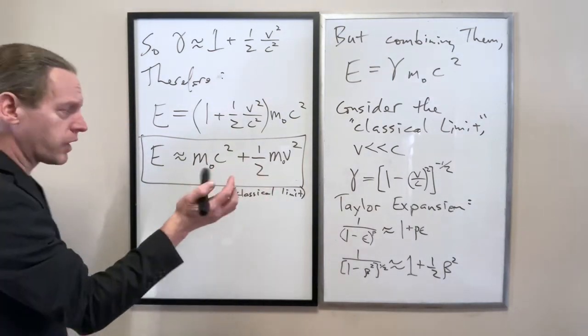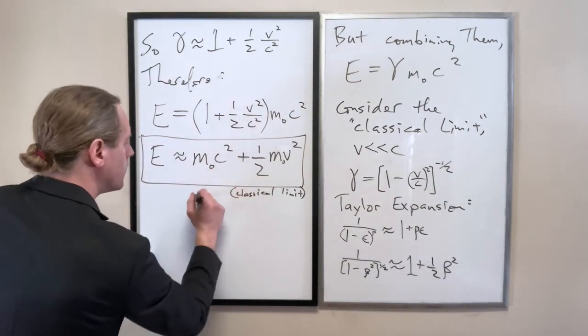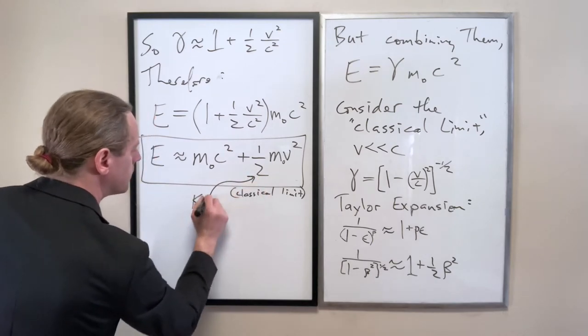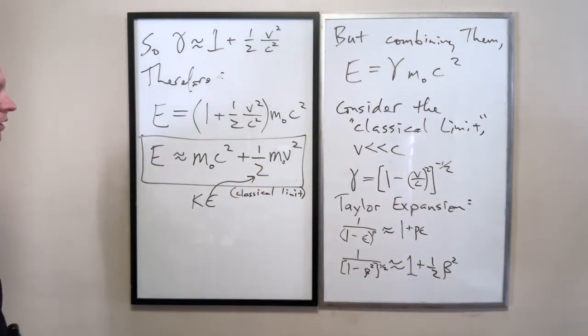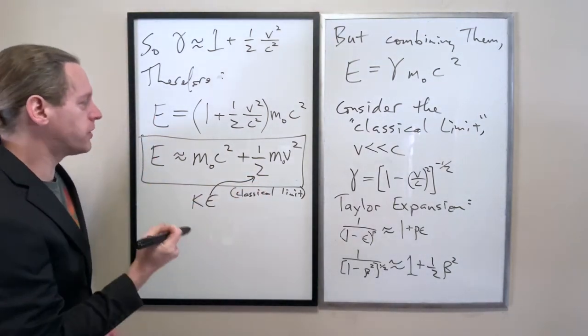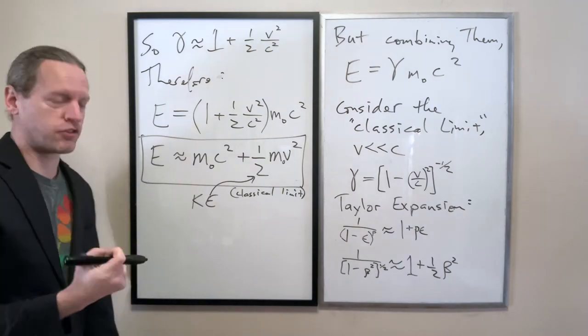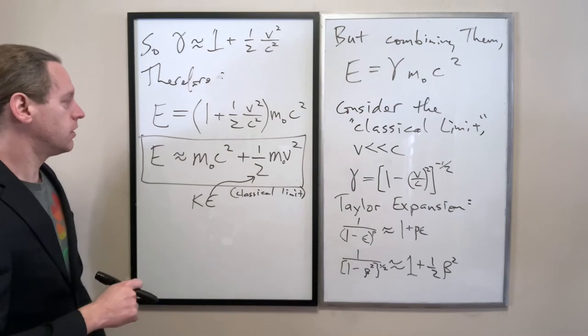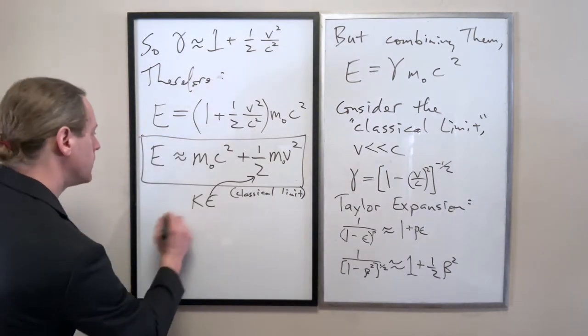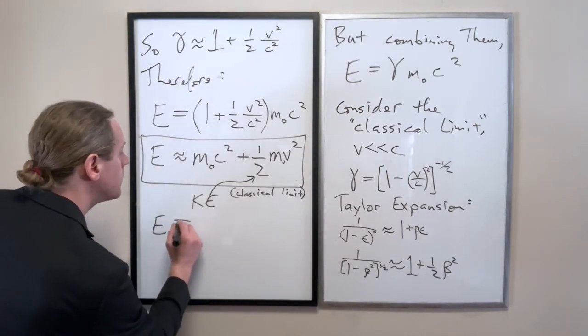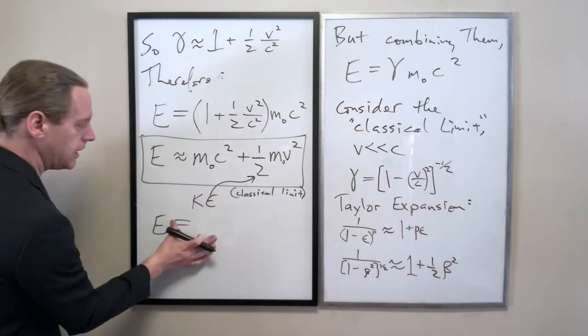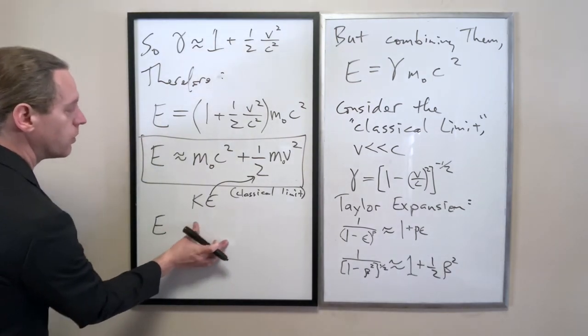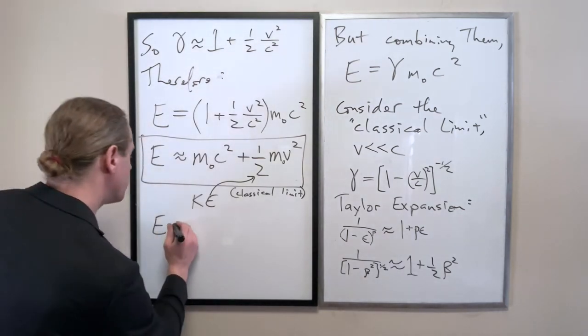So I'm just going to distribute this and this becomes M naught C squared plus, when you cancel out that C's, a half M naught V squared. And actually by the way this should be that for the classical limit. So this is really interesting because we now have some term that looks not only a whole lot like but equivalent to what we know in classical physics as the kinetic energy.